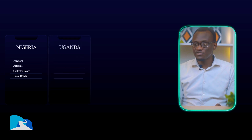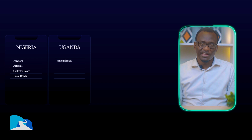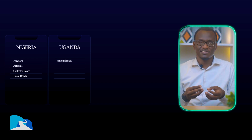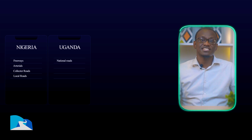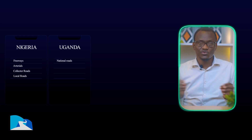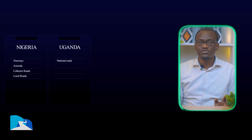In Uganda, the first class is called national roads. These are almost similar to the interstates in that they connect different areas — in Uganda, they connect different districts — so these are called national roads. These can be trunk roads or primary roads.